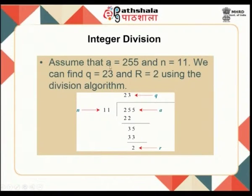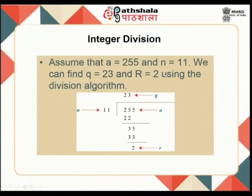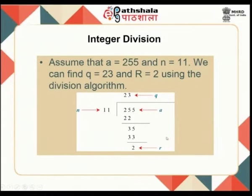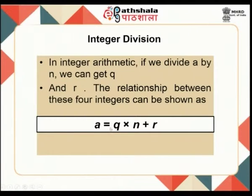For example, take A = 255 and N = 11. Here A is the dividend and N is the divisor, giving us quotient Q and remainder R. The key part related to cryptography is R — the remainder. Using the division algorithm step by step, we need to understand how A relates to N, Q, and R via A = Q × N + R.